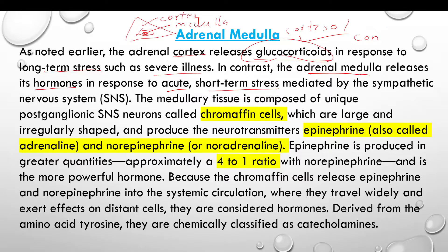The adrenal medulla produces hormones in a matter of seconds or microseconds in response to anxiety, fear, and stress. This is a short-term stress process. In contrast, the adrenal cortex handles long-term stress. When there is short-term stress, what does the adrenal medulla do? The sympathetic nervous system will stimulate it.